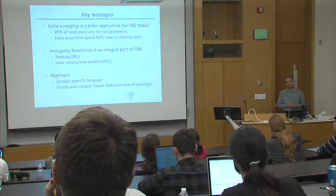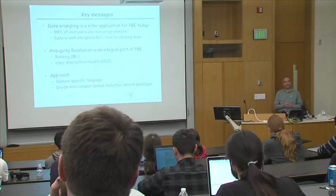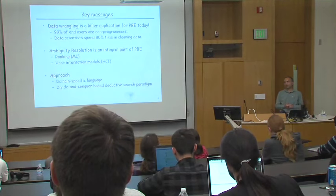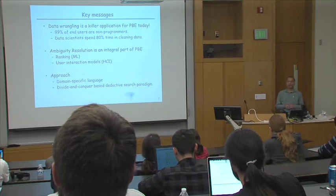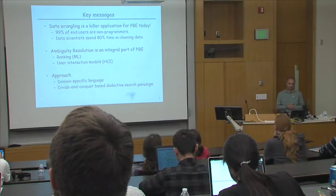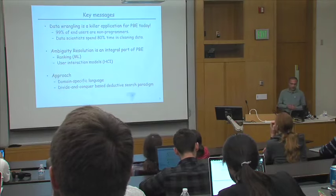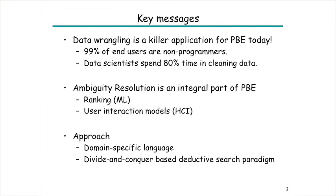If you think about people who do not know programming, they have to do all these repetitive, mundane tasks by hand, which is very error-prone and time-consuming. The second point is how to deal with ambiguities in examples, since examples are a form of under-specification and we need proper systems to resolve this ambiguity. Then I will focus on algorithms for translating examples into programs.